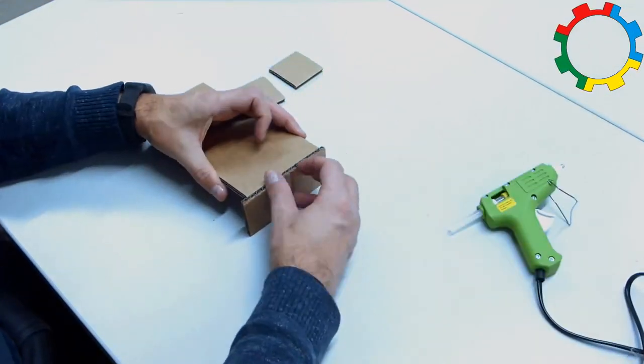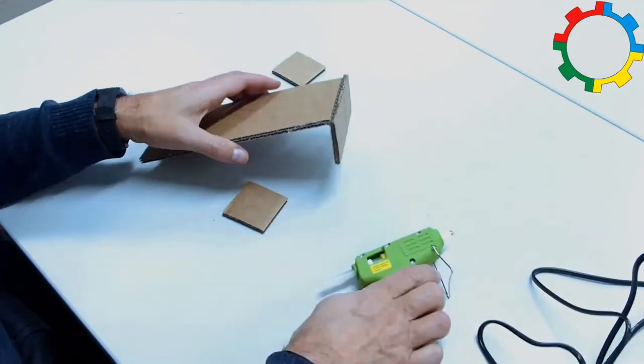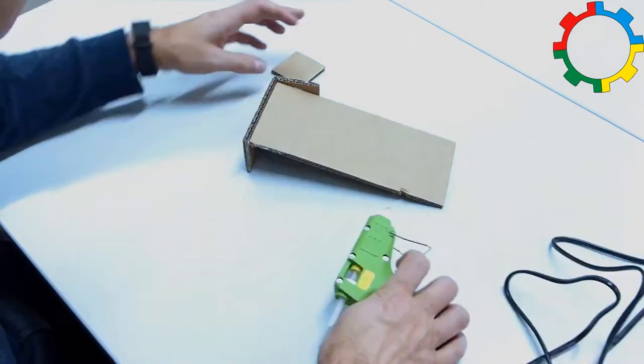Assemble the opposite approach span by gluing together pieces E, C, and both pieces A, as shown.